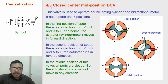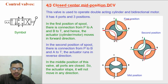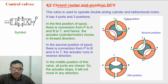This is the four by three closed center mid position direction control valve, but it is of the rotary spool type. In the first position there is connection from P to A and B to T. In the second position there is connection from P to B and A to T. In the middle position all ports are closed — P is closed, T is closed, and A and B are closed.